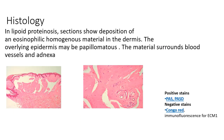Looking at the histology of lipoid proteinosis, there is deposition of eosinophilic homogeneous material in the dermis. The overlying epidermis may show papillomatosis. The material surrounds the blood vessels and the adnexa. Special stains like PAS and PAS-D are generally positive. The negative stains are Congo red, and immunofluorescence for ECM1 will be negative because the ECM1 gene is mutated.